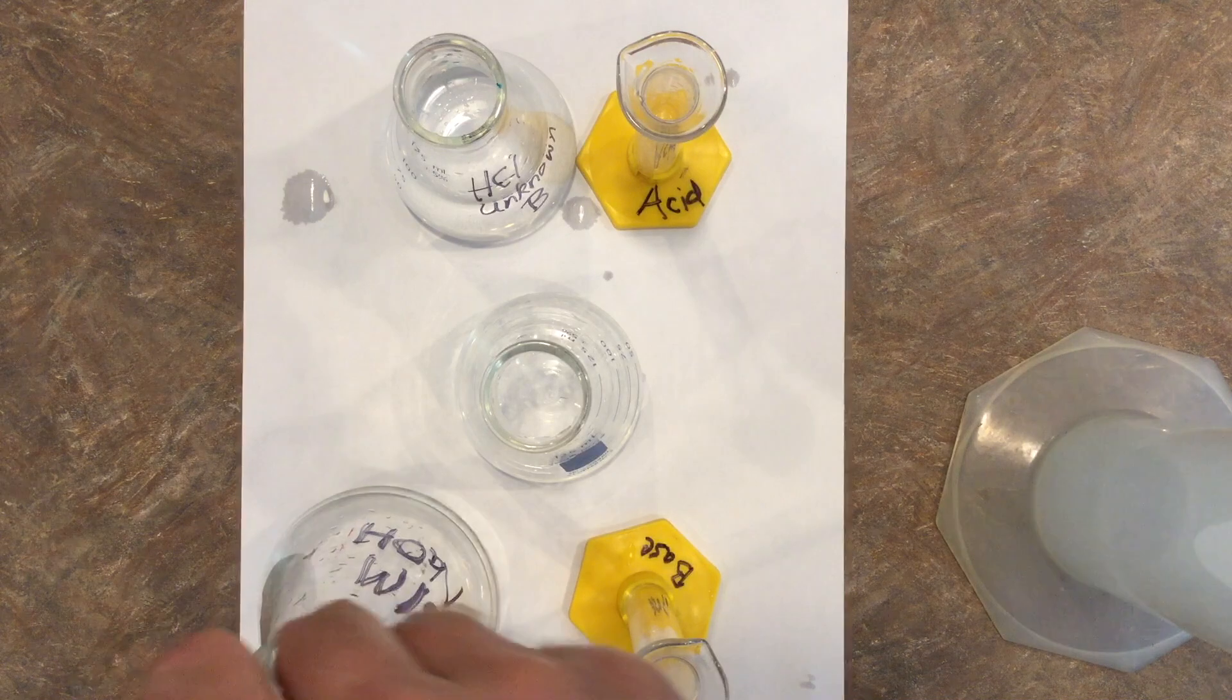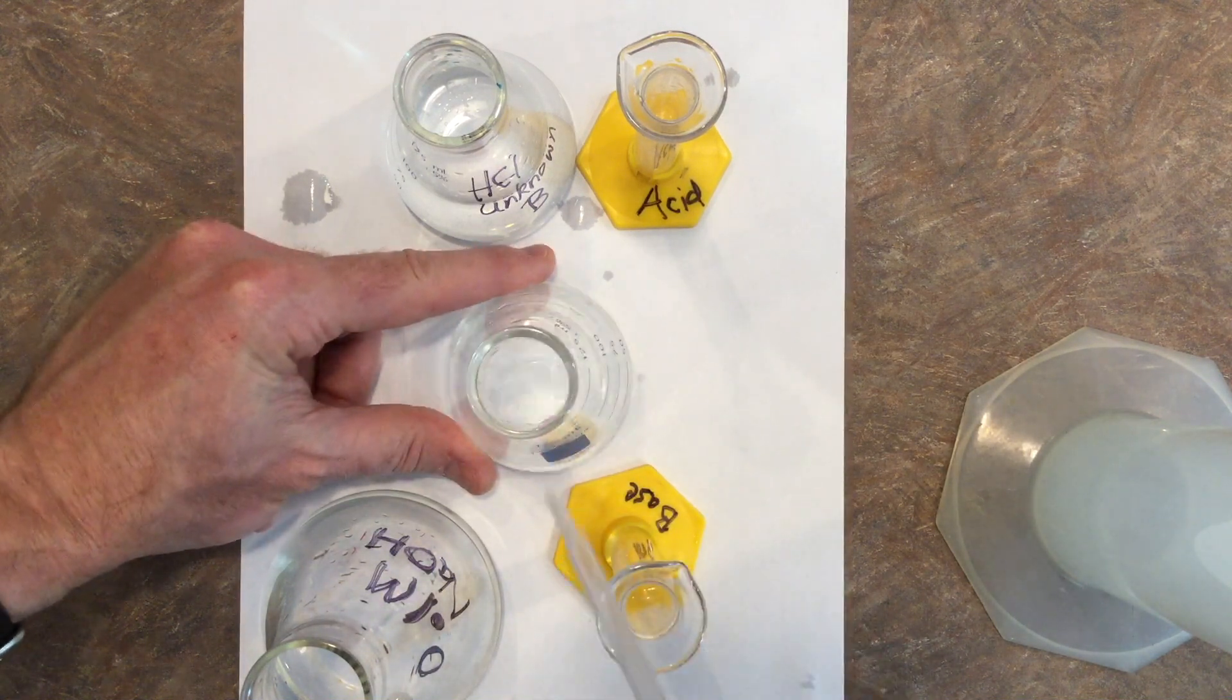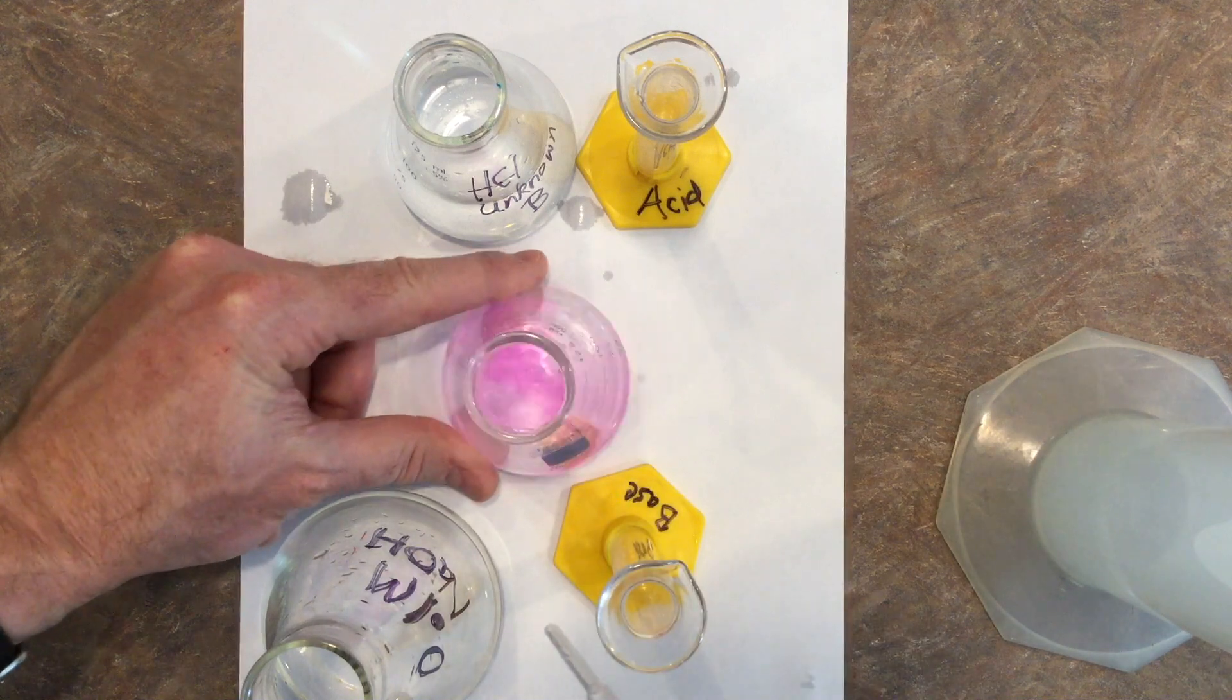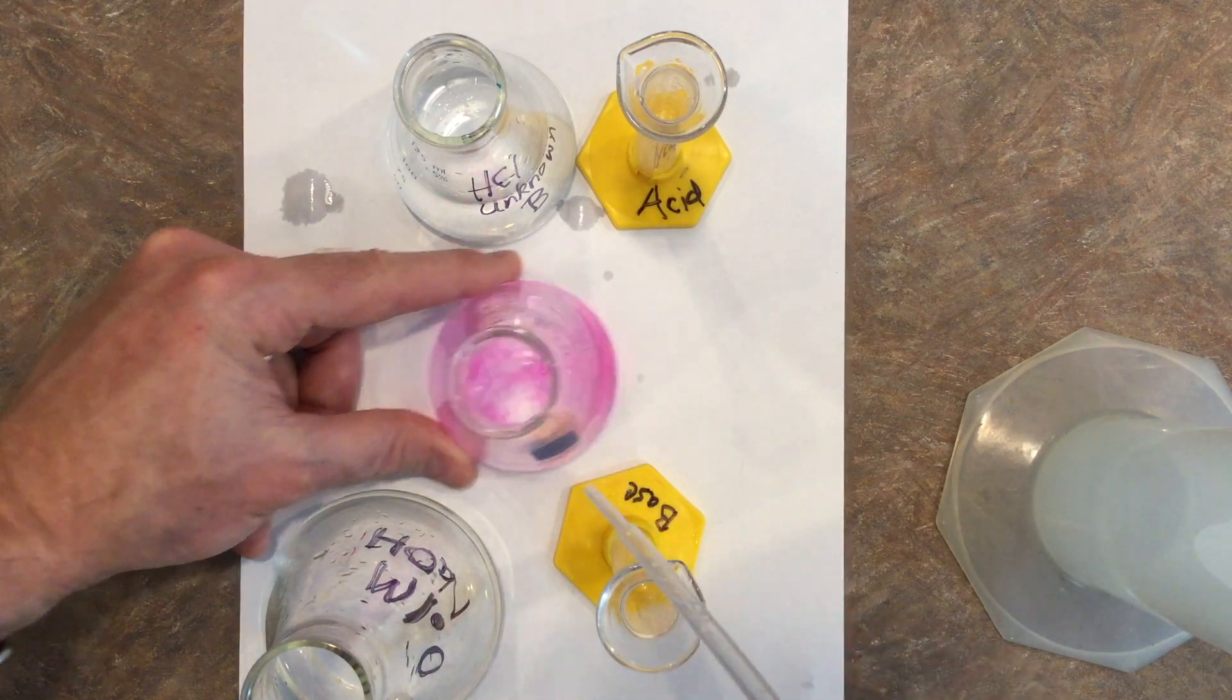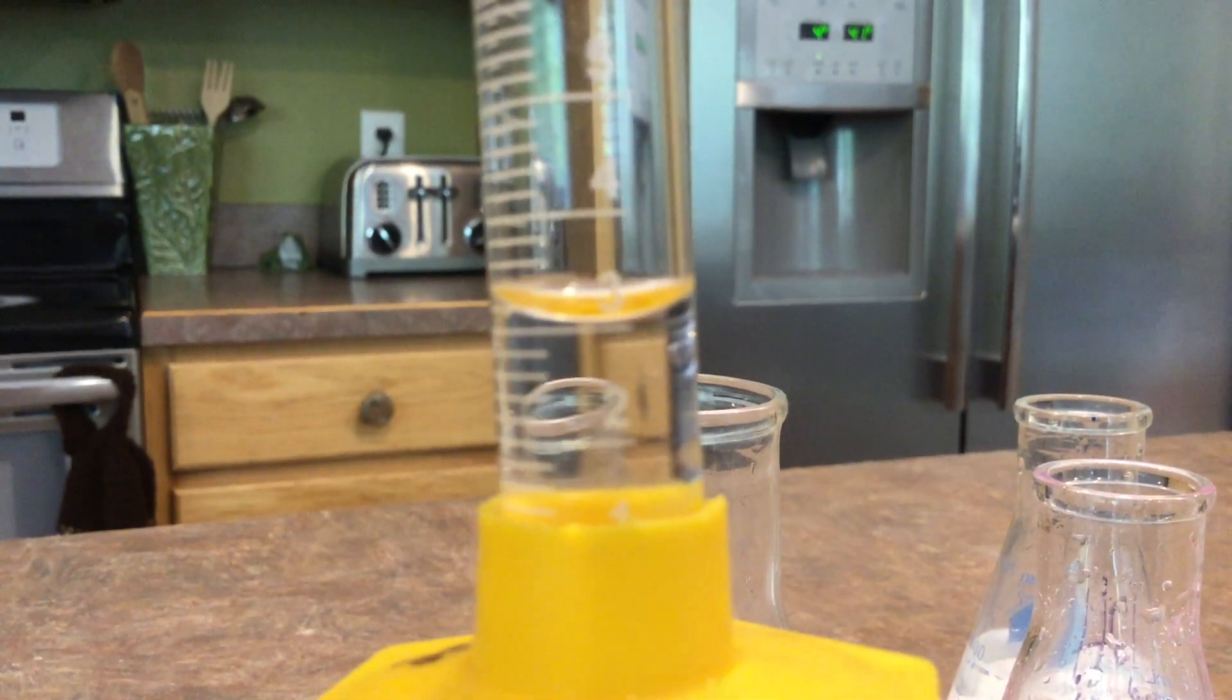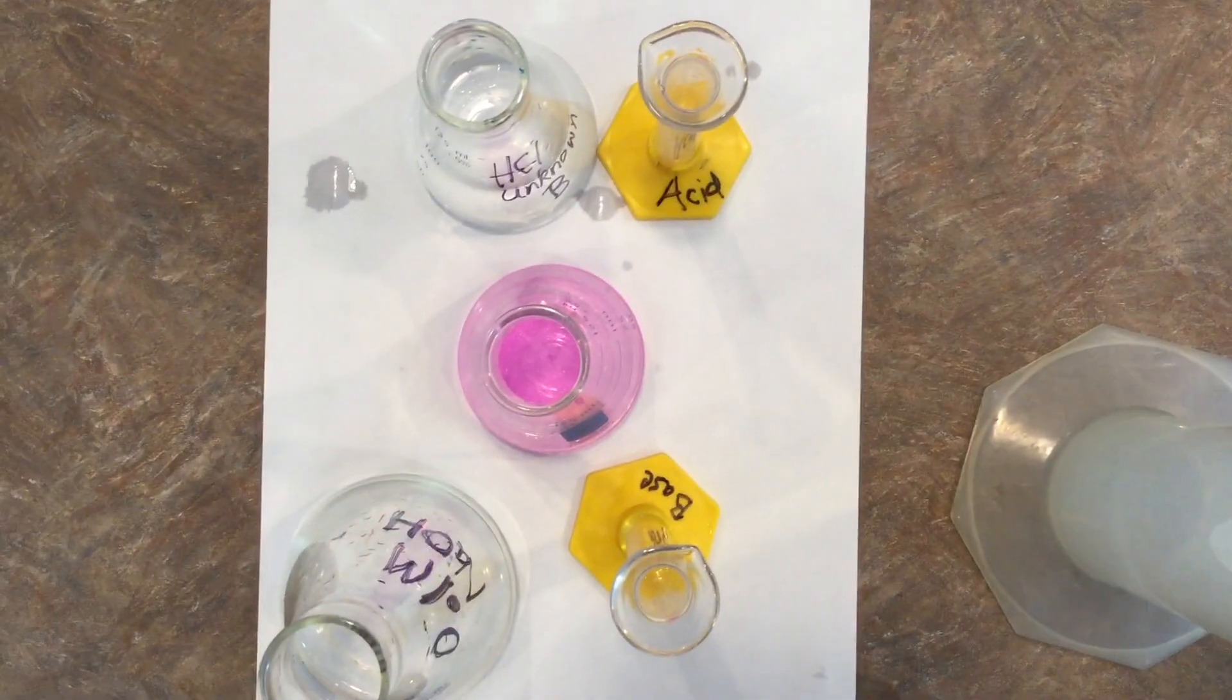Well, I've run out of my 10, so I'll need to go ahead and fill it up again. And back to slowly adding until we can get that color change to remain constant. And there it is. So when we look at the side of the graduated cylinder it reads 3 milliliters, which means we've used 7 from this one and the first 10. So a total of 17 milliliters of sodium hydroxide to neutralize the hydrochloric acid.